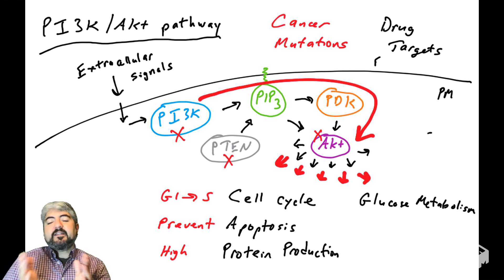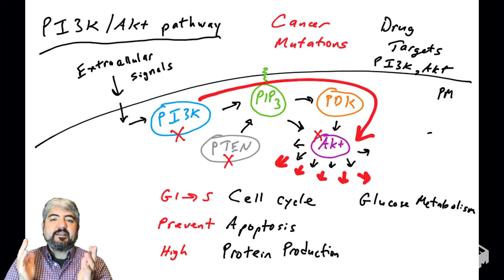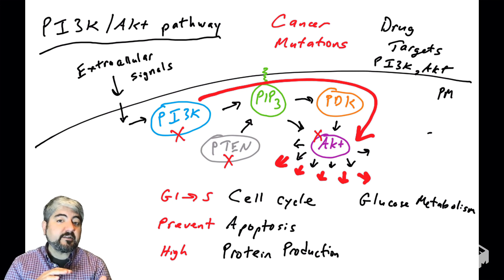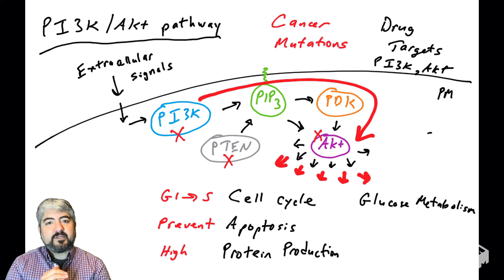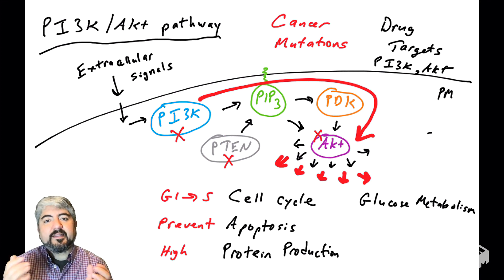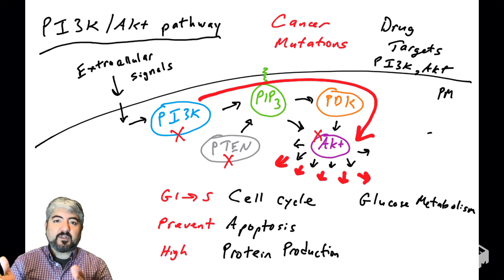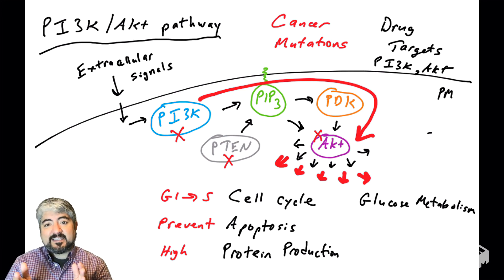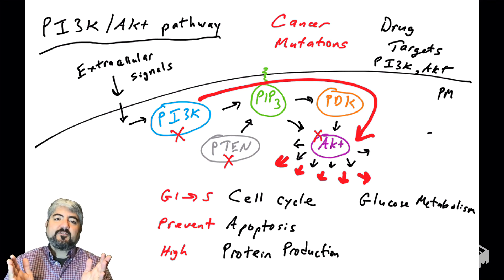The other reason to discuss this pathway when talking about cancer biology is drug targets. If you want to treat cancer, small molecules that act as inhibitors are great tools here, because many of these enzymes are kinases — and we make kinase inhibitors that can bind to ATP binding pockets and inhibit kinase function, which will inhibit phosphorylation and inhibit signaling. There are drugs that target PI3 kinase or AKT that can prevent this pathway from being activated.